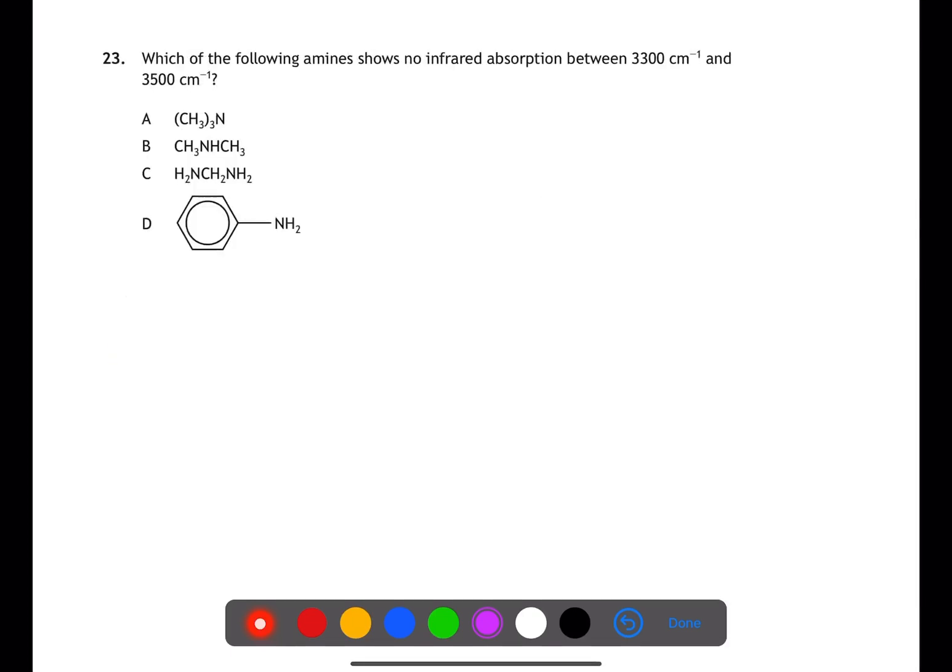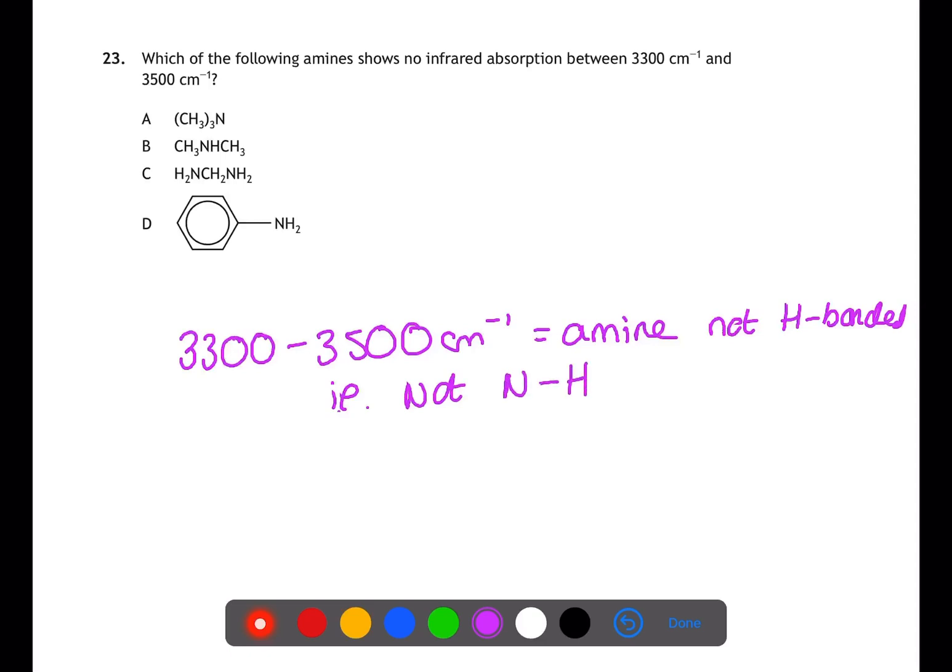For question 23, you need to use the table in your data book for infrared absorption. Between 3300 and 3500 per centimeter, this is an amine which is not hydrogen bonded. This means that there is no NH bond. Therefore, the only possible answer can be A as this is the only tertiary amine which is present.